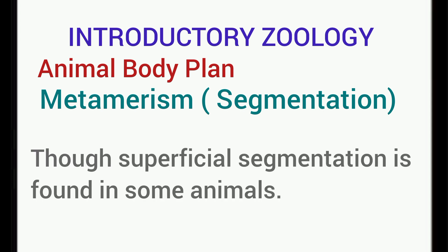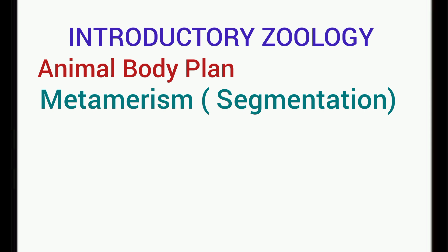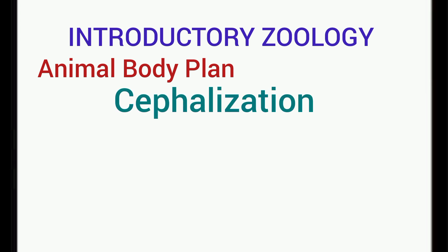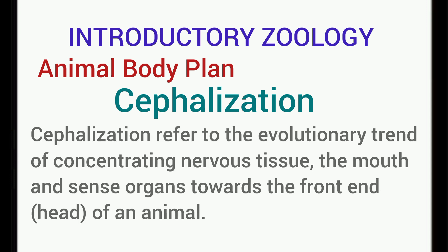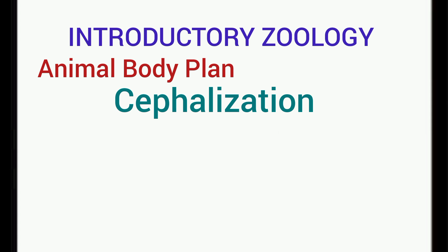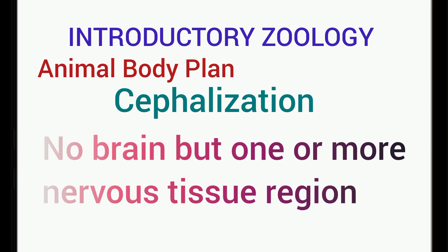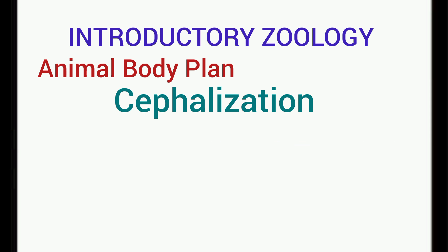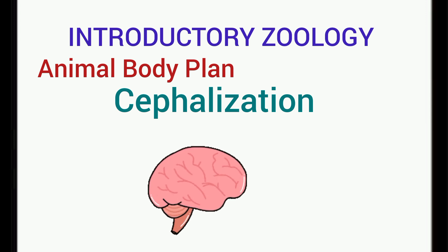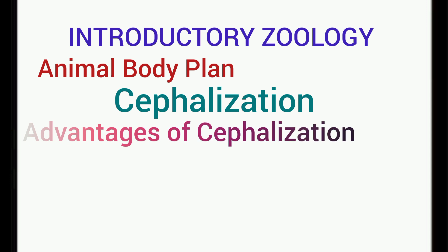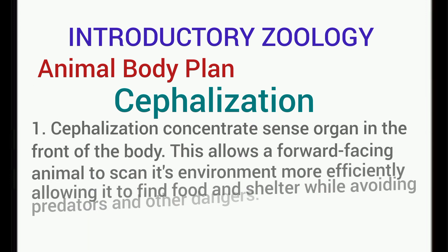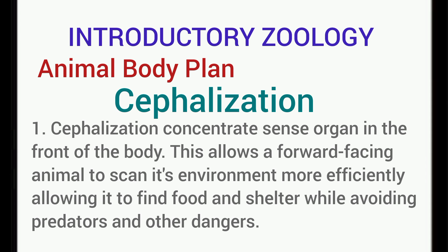The last determinant of the animal body plan in today's video is cephalization. Cephalization refers to the evolutionary trend of concentrating nervous tissues, the mouth, and sense organs towards the front end or the head of an animal. Fully cephalized organisms have a head and brain, whereas less cephalized animals have one or more nervous tissue regions but no brain. Cephalization is found only in bilaterally symmetrical animals. It concentrates sense organs in front of the body, allowing a forward-facing animal to scan its environment more efficiently and find food and shelter while avoiding predators.